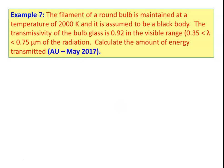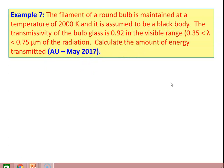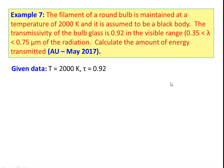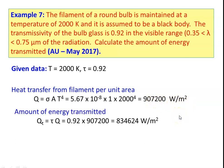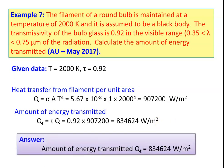Example: A filament of a round bulb is maintained at 2000 Kelvin and assumed to be a black body. The transmissivity of the bulb glass is 0.92 in the visible range. Calculate the amount of energy transmitted. Given: T equals 2000 Kelvin, tau equals 0.92. Q equals sigma times A times T to the power 4, which is 5.67 times 10 to the minus 8 times 1 times 2000 to the power 4, equal to 907,200 watts per meter squared. Qt equals tau times Q equals 0.92 times 907,200, which gives 834,624 watts per meter squared.